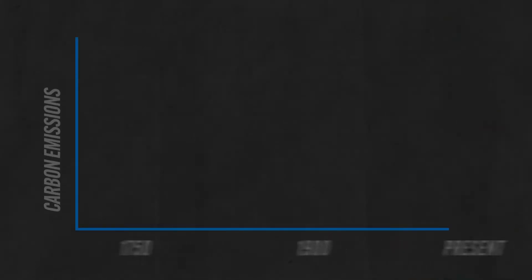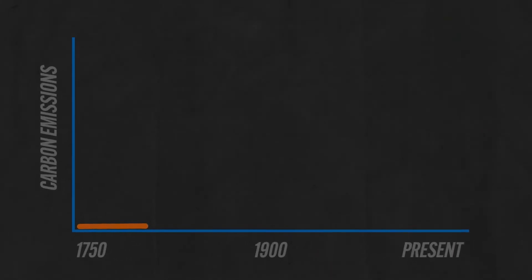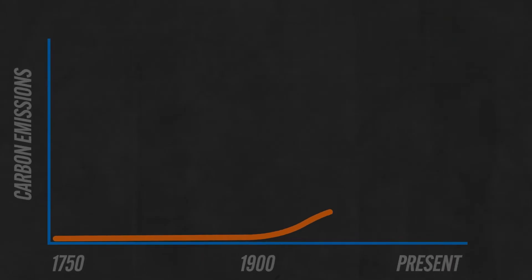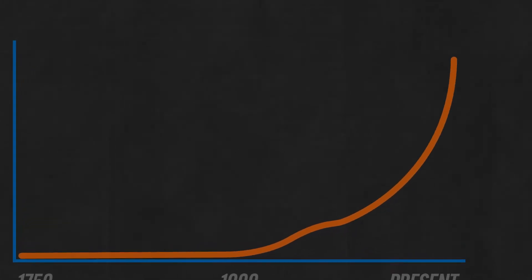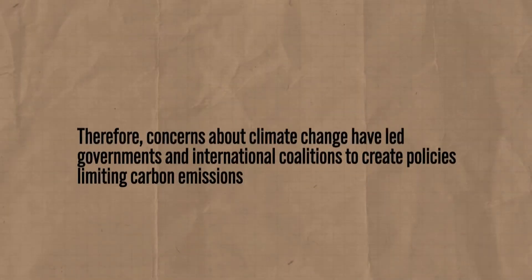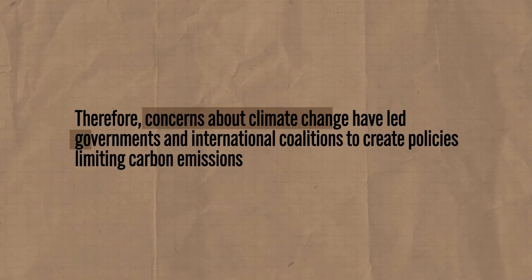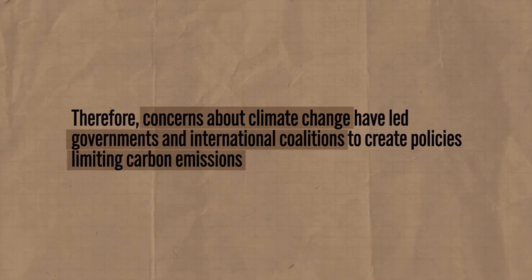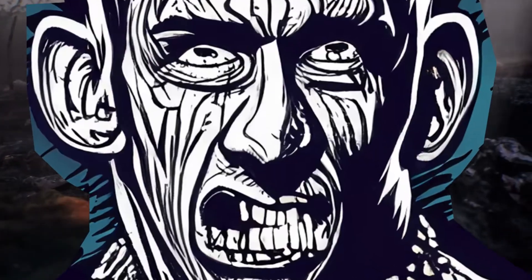One of the main concerns surrounding sustainability right now is climate change. Since the 18th century, humans have used fossil fuels like coal and oil more and more, and by burning them in our cars and factories, greenhouse gases are released into the environment. Those gases trap heat, and the more we hurl those molecules into the air, the hotter the earth becomes — leading to more wildfires and melting ice caps that raise sea levels. Concerns about climate change have led governments and international coalitions to create policies limiting carbon emissions, so that future generations can live on the earth in peace.